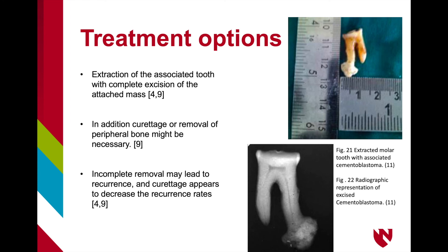Treatment options for cementoblastomas are fairly straightforward: extraction of the associated tooth with complete excision of the attached mass. After removal, curettage is recommended to decrease the rate of recurrence. Recurrence and continued growth are possible if excision is incomplete, with a recurrence rate as high as 37.1%. Prognosis is usually excellent with complete removal of the tooth and attached tumor. Figure 21 shows the extracted molar tooth with the associated cementoblastoma, and Figure 22 shows an excised tooth and lesion radiographically.